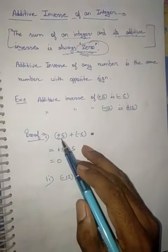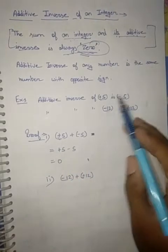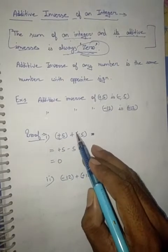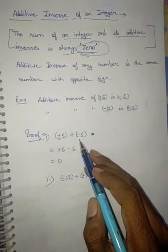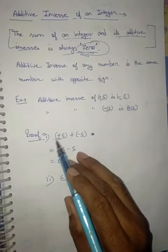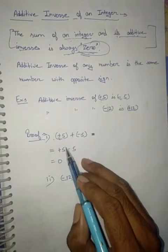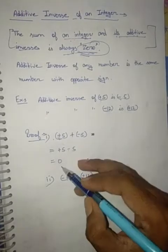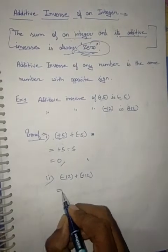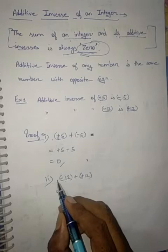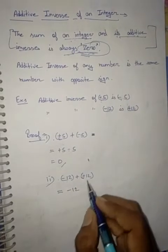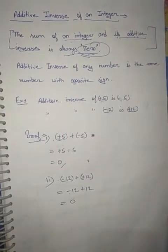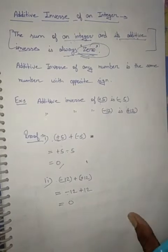For example, 5 plus minus 5 becomes 0. Similarly, minus 12 and plus 12: minus 12 plus 12 becomes 0. So this is the additive inverse of any integer or any number.